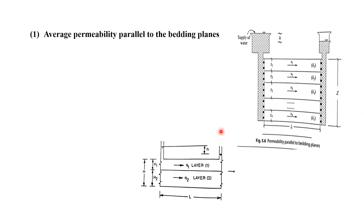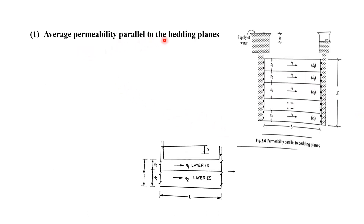Now we shall see the first condition: average permeability parallel to the bedding plane. Let us see this figure. This is one layer, the second layer, third layer — many layers are there. The flow is taking place from this direction to this direction — from this side to that side. The head loss shown here is H, and the length of the strata is capital L. Z1 is the thickness of the first layer, Z2, Z3 are the thicknesses, and K1, K2, K3 are the permeabilities for each layer.